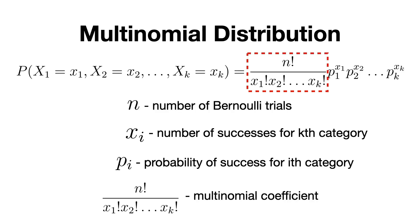And the term n factorial divided by x1 factorial multiplied by x2 factorial, and so on, is the multinomial coefficient, which, similar to the binomial coefficient, counts the number of ways to arrange the x_i occurrences of each outcome across n trials.